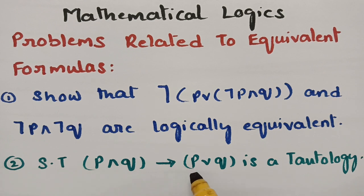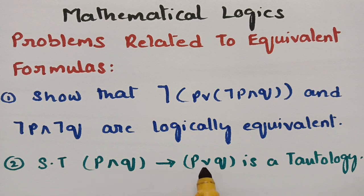The second question is: we have to show that (P and Q) implies (P or Q) is a tautology. As tautology means we have to show that the answer is true — if you evaluate this implication, we must get true as the answer since it is a tautology. These are the two previous questions asked in the question paper.